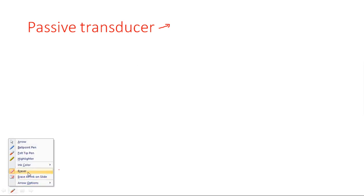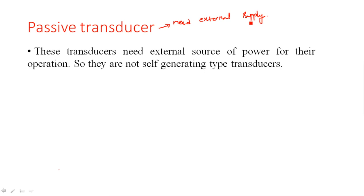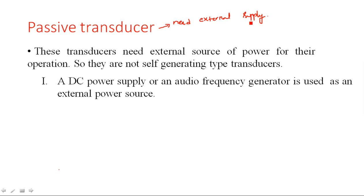Passive transducers definitely need an external power supply. Without an external supply, a passive transducer cannot operate. These transducers need an external source of power for their operation, so they are not self-generating type transducers. A self-generating type is one that does not need any external source and can generate energy on its own. For passive transducers, a DC power supply or an audio frequency generator is used as an external power source.